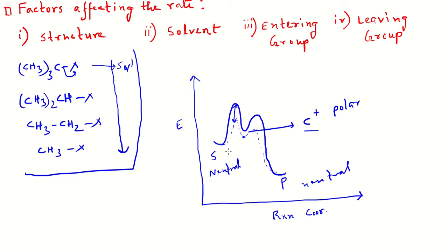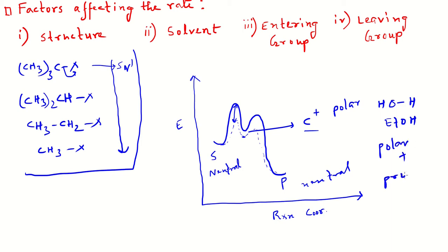If the solvent is protic, it contains hydrogen-donor molecules like water and alcohols, which are both polar and protic. This stabilization is even more pronounced. Therefore, the ultimate choice of solvent for SN1 reaction is a polar protic solvent.